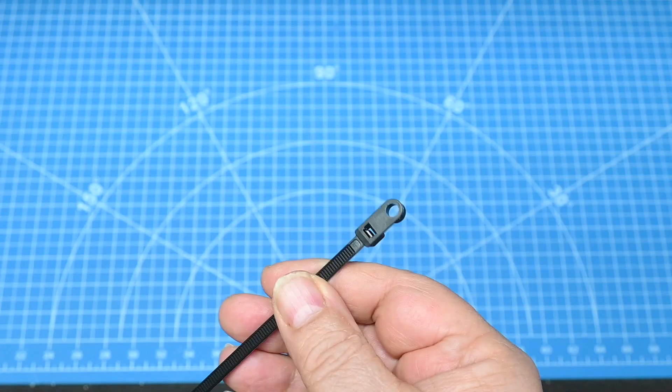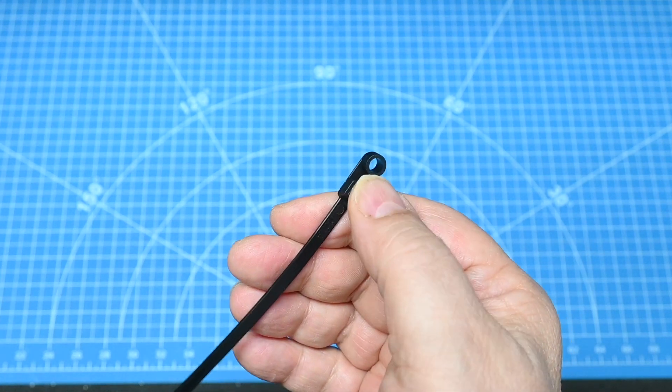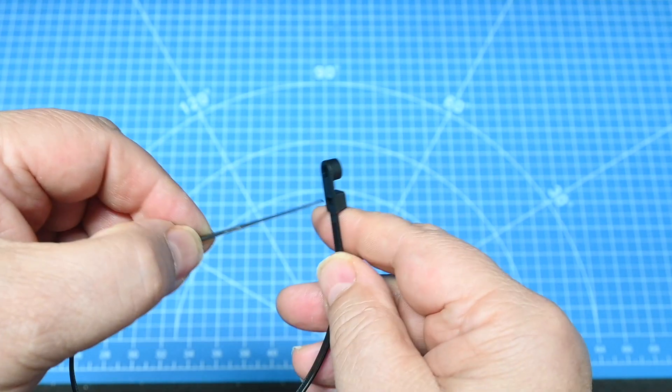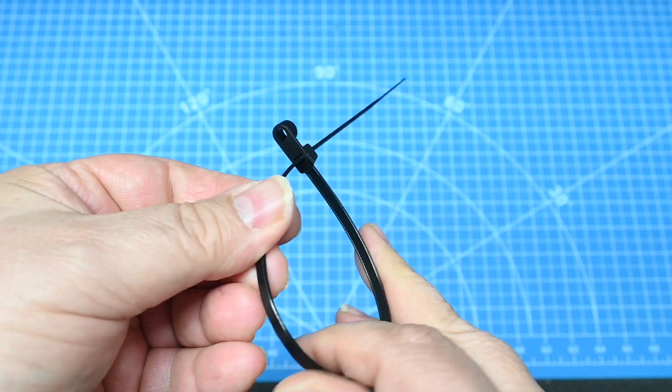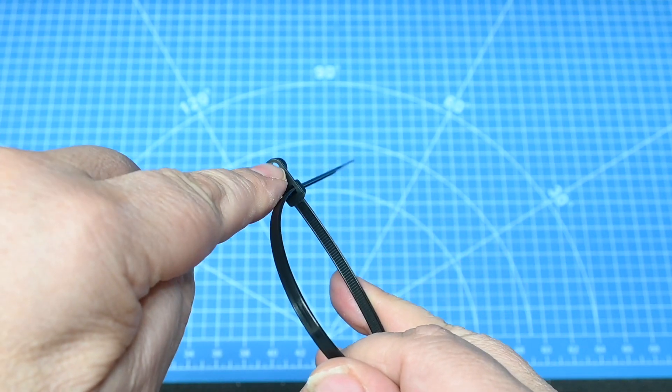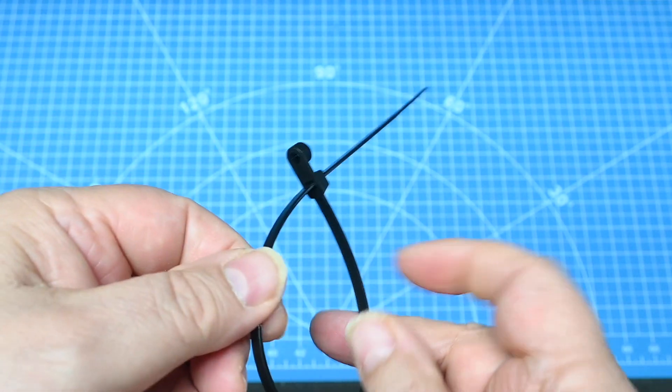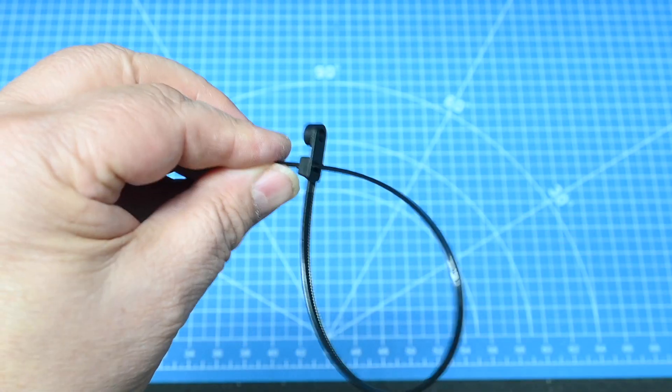The first cable tie to look at is one that has a mounting head. Essentially it's just a hole in the end and you take the cable tie and tie whatever you have. Then you drill a hole in whatever you want to mount this to and you put a screw in here and tighten it down. This is a method of securing the cable tie and they're available in all different lengths.